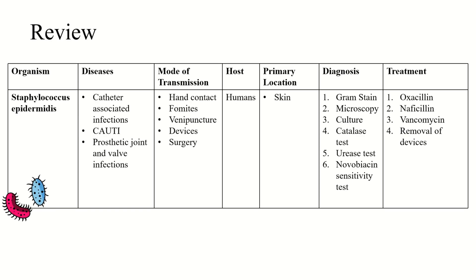To wrap up: the organism is Staphylococcus epidermidis. The diseases it causes include catheter-associated infections, catheter-associated urinary tract infection (CAUTI), and prosthetic joint or prosthetic valve infections — the hip joint is especially common. Transmission occurs by hand contact, fomites, puncture devices like tampons, nasal packing, catheters, and surgical wounds. The host is human beings, with the primary location being the skin. Diagnosis is with Gram stain, microscopy, culture, catalase and urease tests, and novobiocin sensitivity tests. Treatment includes oxacillin, nafcillin, and vancomycin, plus removal of infected devices.